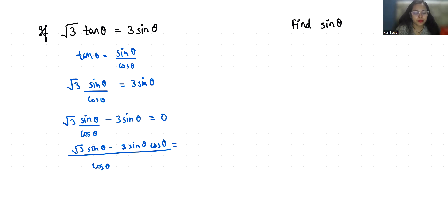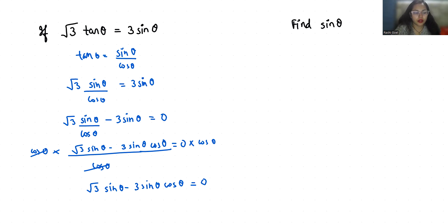Now if I multiply with cos theta on both sides, this will cancel out and 0 times cos theta becomes 0. So root 3 sin theta minus 3 sin theta cos theta cos theta equals 0. Now if I take root 3 sin theta as common, then 1 minus — this 3 becomes root 3 because root 3 times root 3 is 3 — so 3 cos theta equals 0. Now two cases arise: first, root 3 sin theta equals 0, and second, cos theta equals 1 by root 3.